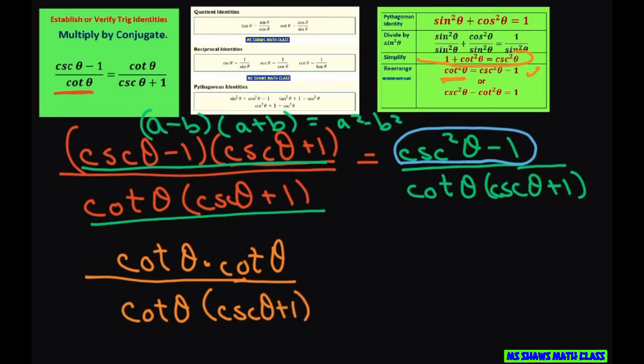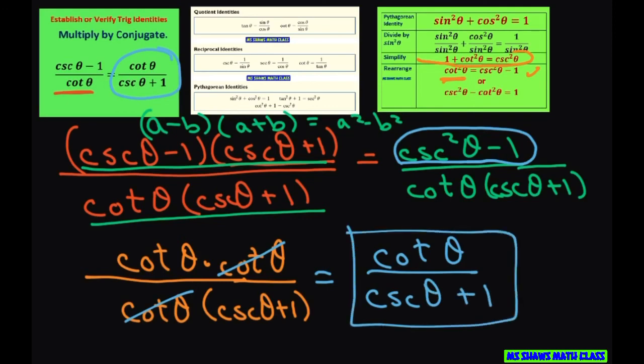So clearly you can start seeing the pattern here that we're getting to our desired result because the cotangents will cancel there and they divide out and equal 1. So you're left with cotangent of theta divided by cosecant of theta plus 1. And that is your final answer.